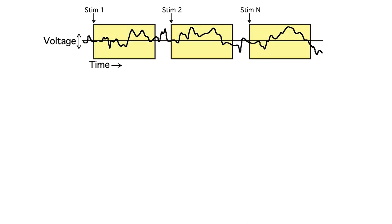First, we grab the period of EEG following each stimulus. This is called segmenting the EEG. Each segment is called an EEG epoch.